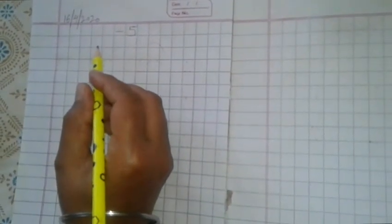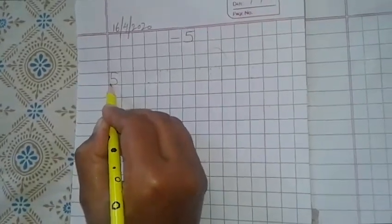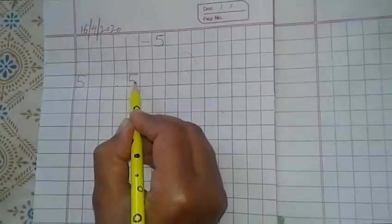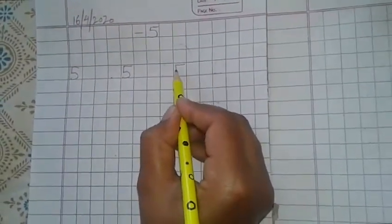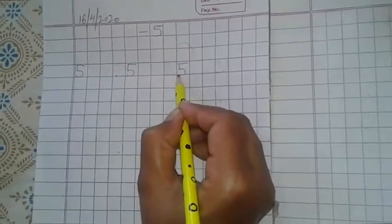Try to join the first 2 dots in sleeping line, next 2 dots in standing line, and next 2 dots curve shape. Sleeping line, standing line, curve shape.